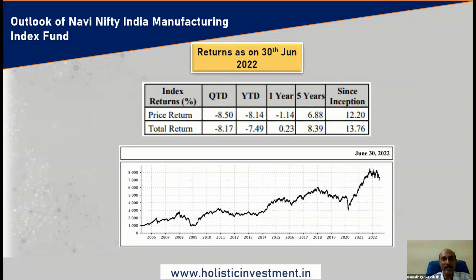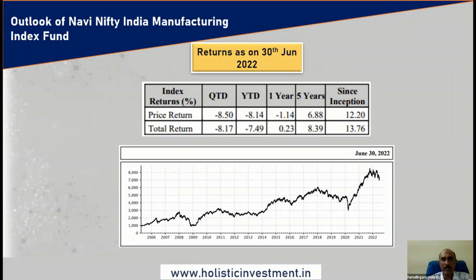Concentration can increase risk and can increase return. Looking at the total return index of Nifty India Manufacturing: in the last quarter it delivered 8% negative return; calendar year to date, minus 7%; in the last one year, 0.23%; in the last five years, only 8.39% annualized — which seems lower compared to other diversified equity funds. Since inception, this index has delivered a decent 13.76%. So for five years and less, this fund has predominantly not beaten inflation; however, since inception, it has beaten inflation.